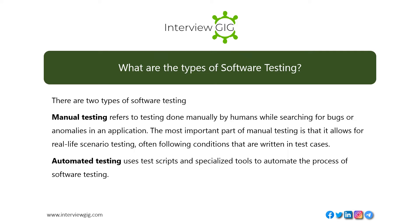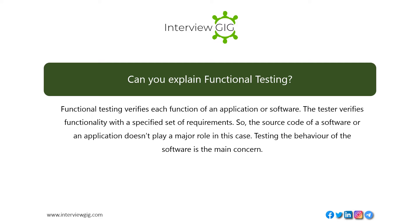What are the types of software testing? There are two types: manual testing, which refers to testing done manually by humans while searching for bugs or anomalies in an application. The most important part of manual testing is that it allows for real-life scenario testing, often following conditions written in test cases. Automated testing uses test scripts and specialized tools to automate the process of software testing.